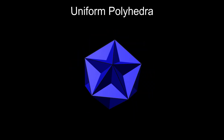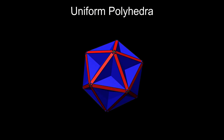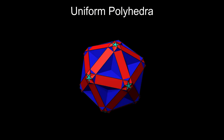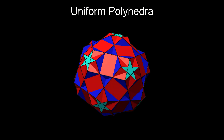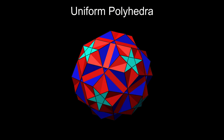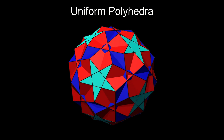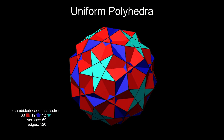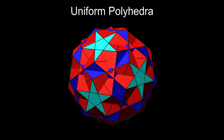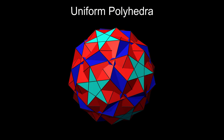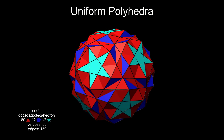If we expand the great dodecahedron, a process also known as cancellation, we get a rhombi-dodeca-dodecahedron, with squares separating the pentagons and pentagrams. We can then twist the pentagrams to get a snub dodeca-dodecahedron.